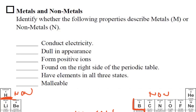So what do we know about metals? Conduct electricity, that's definitely a metal. Dull in appearance, that's a non-metal, because metals are shiny. Form positive ions. Metals form positive ions because they're on the left side, they lose their electrons easily.